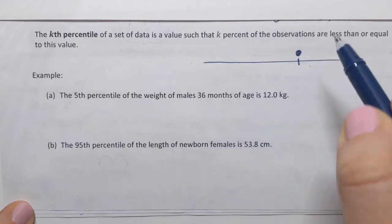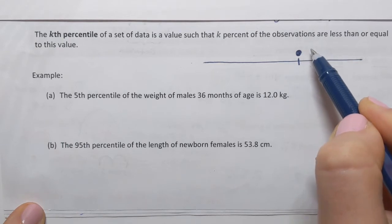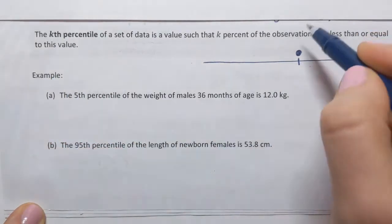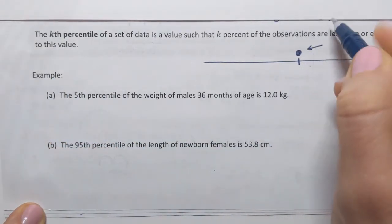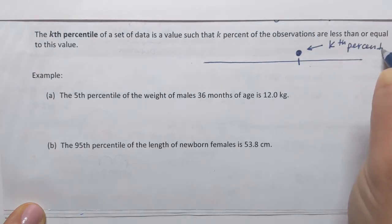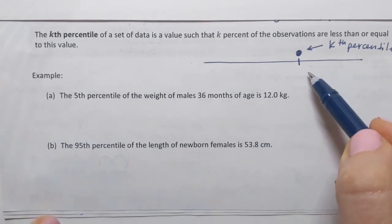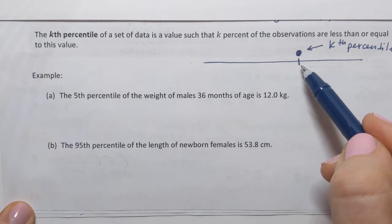So I'm looking at a specific data value and I'm calling that data value kth percentile. So I'm saying that that value is called kth percentile or I also say that it's at kth percentile. What does this mean?